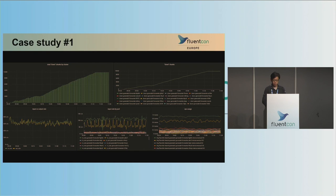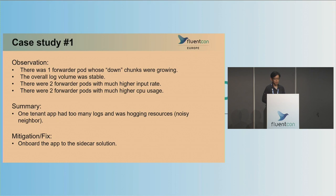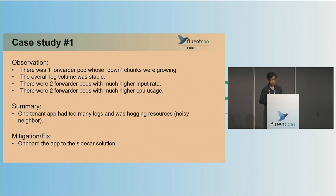So what happened? One tenant generated too many logs and had very few replicas, so it only happened on one or two nodes. It hogged resources, and as a result our forwarder struggled and failed to keep up. Our mitigation was simply to add an annotation to the app and onboard it to the sidecar solution.